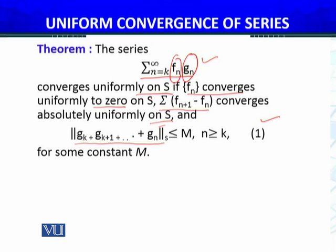The idea is that we are going to discuss the sequence of partial sums of this series, and we are going to manipulate it such that we will write that sequence of partial sums using the given information. We will use three pieces of information: that fn converges uniformly to 0, this series converges absolutely uniformly on S, and inequality 1. We will use them to prove that this is uniformly convergent.